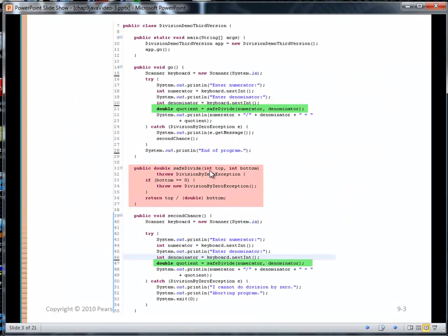So here's an example. This is the division demo, third version. And we're going to have a short main method. It's going to call Go. Go is going to ask for a numerator and denominator. And then it's just going to call SafeDivide and pass it the numerator and denominator. Now, the thought here is SafeDivide is not going to worry about trying to catch any exception that it generates. But rather, it's going to send back to Go that an exception was generated.